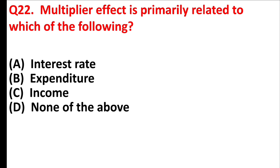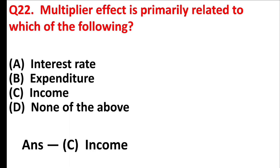Multiplier effect is primarily related to which of the following? Answer is option C: income.